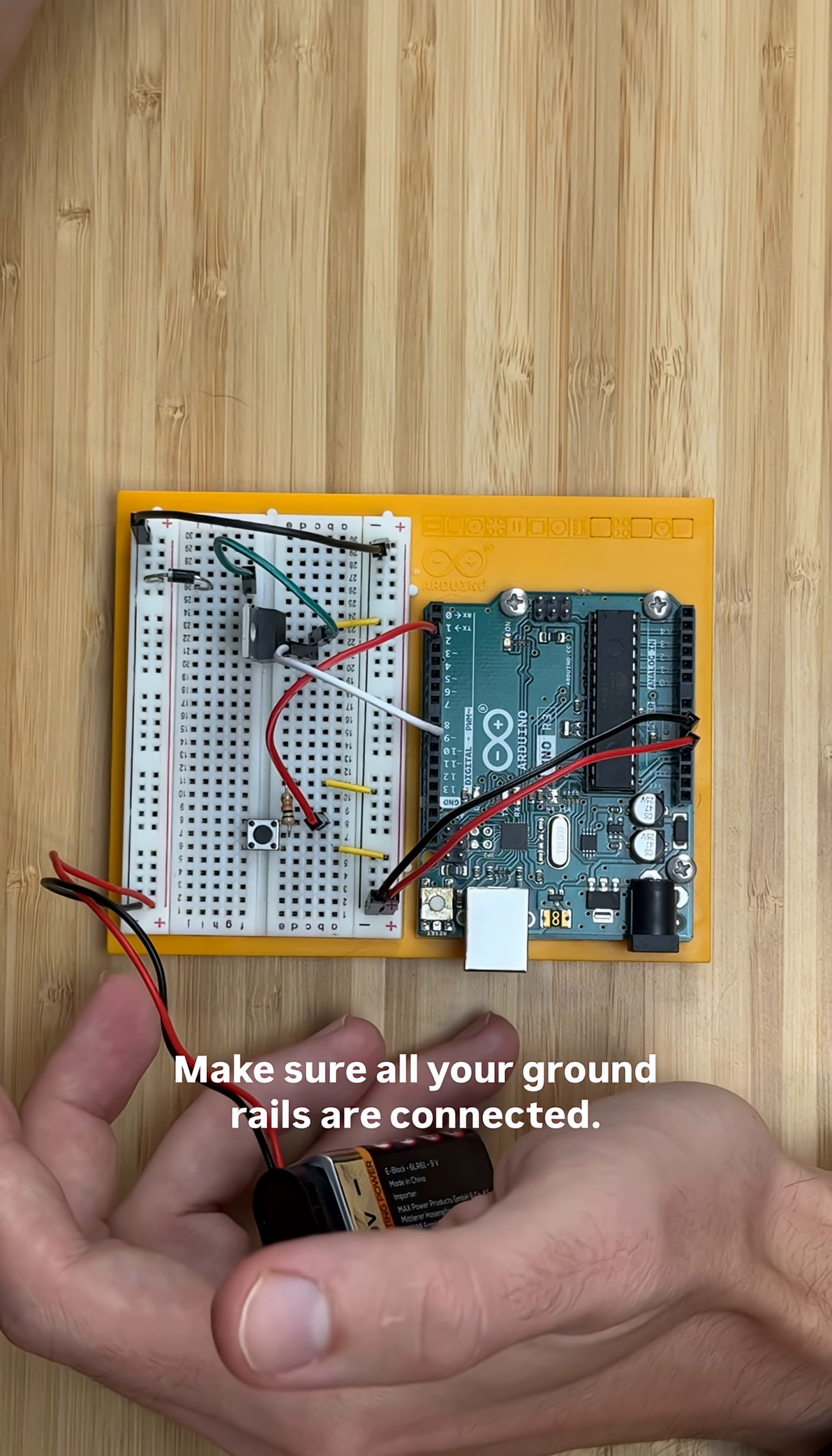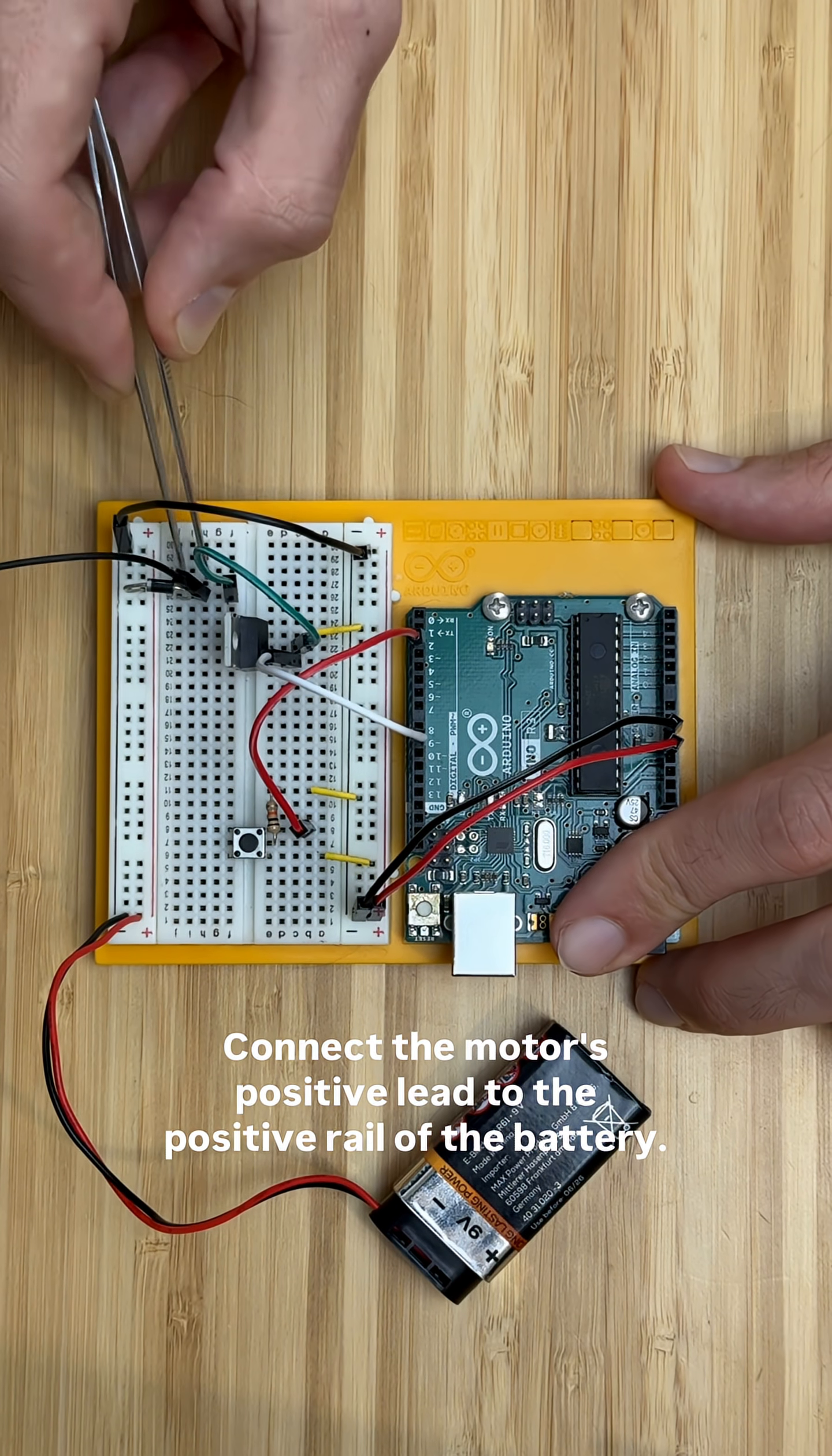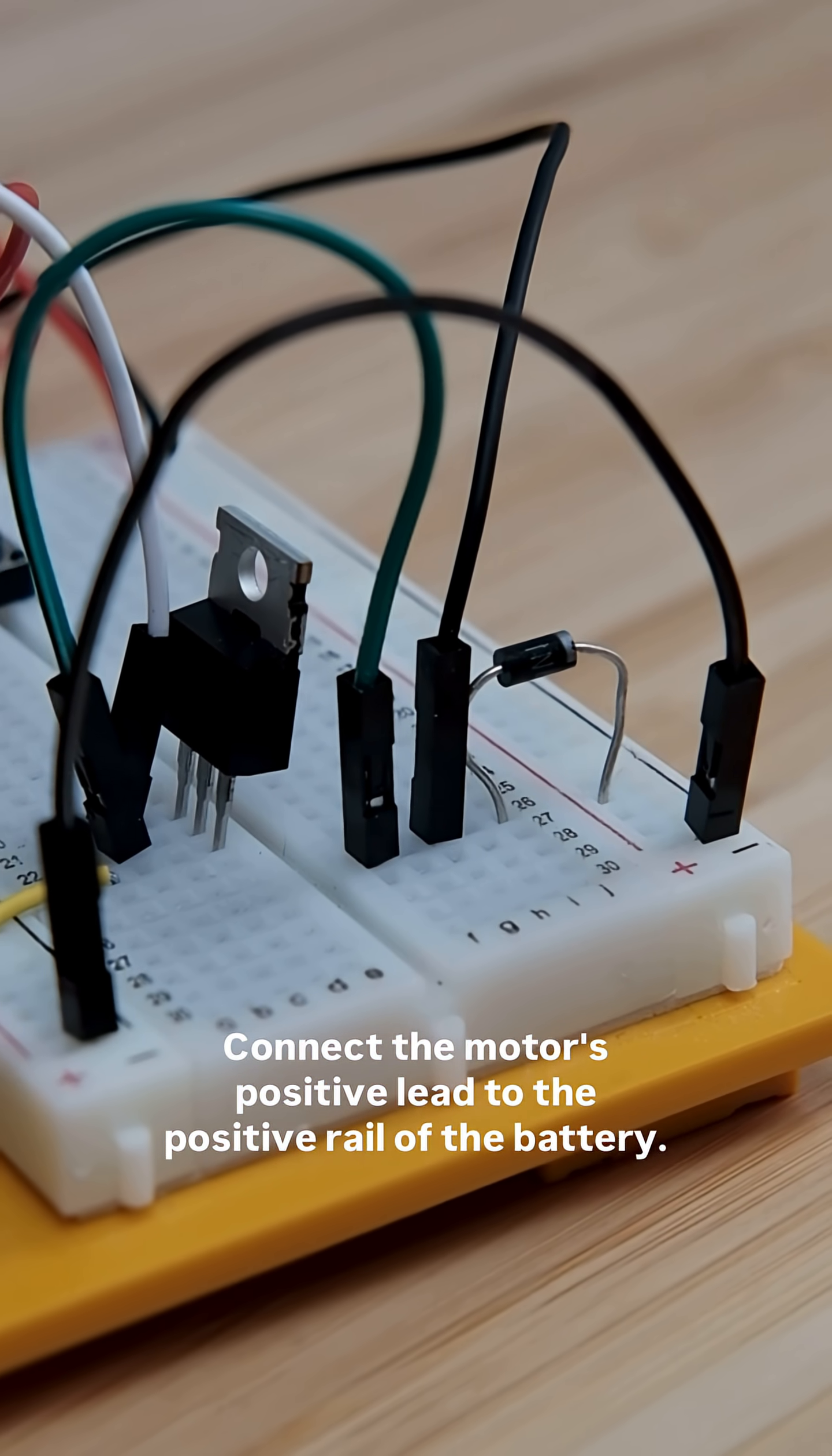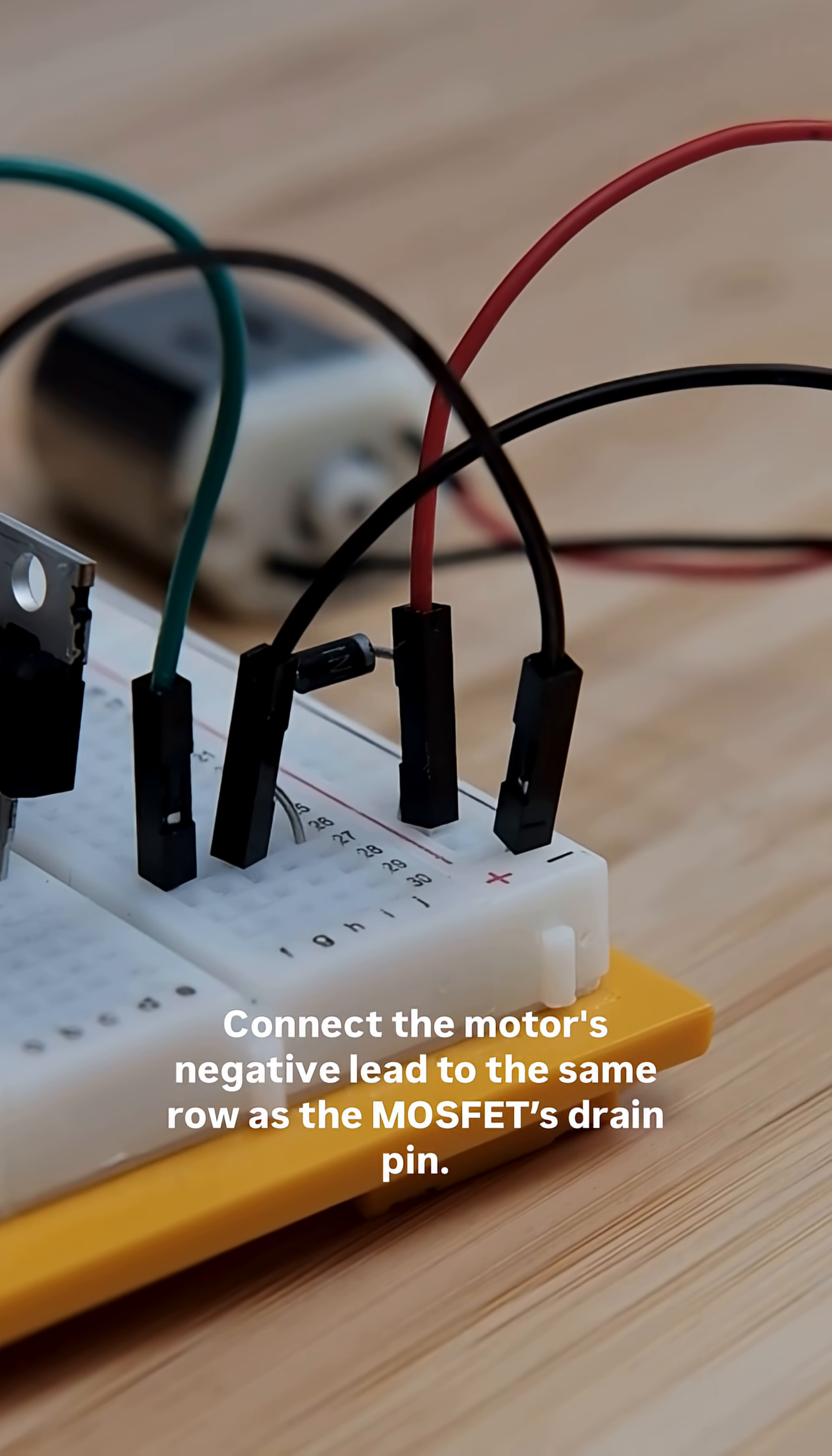Make sure all your ground rails are connected. Finally, let's connect the motor. Connect the motor's positive lead to the positive rail of the battery. Connect the motor's negative lead to the same row as the MOSFET drain pin.